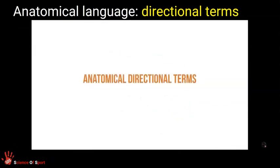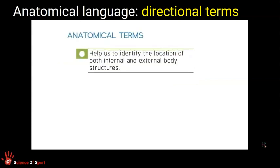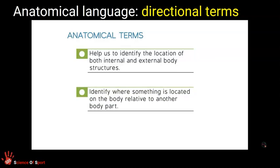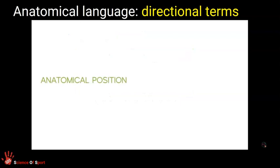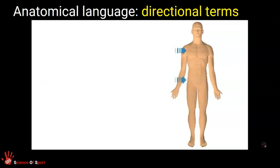In this video, we will be discussing anatomical directional terms. Anatomical terms help us to identify the location of both internal and external body structures. Most of these terms are used to identify where something is located on the body relative to another body part. These terms refer to the locations of human body parts as they occur in the universal anatomical position — an upright standing position with arms at the side, palms facing forward, and both feet together.